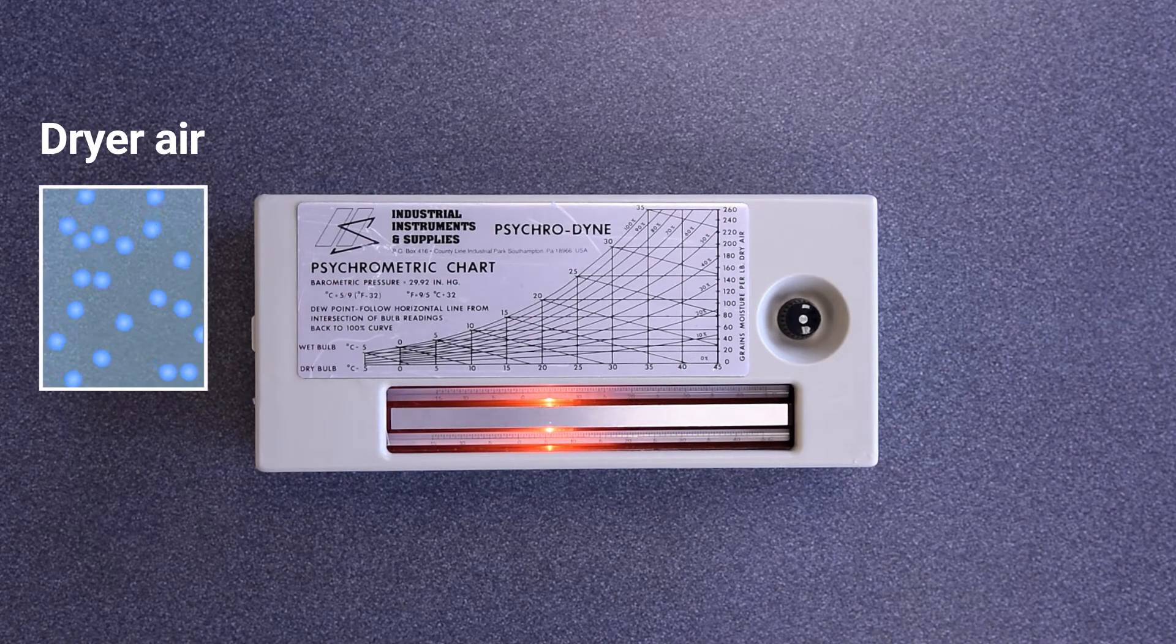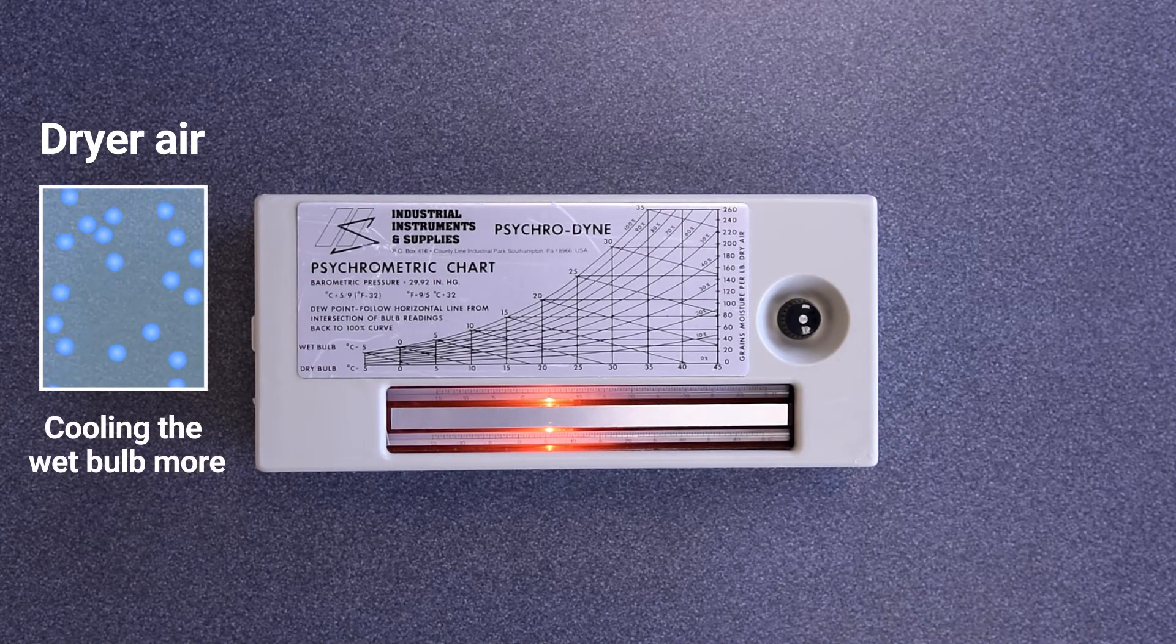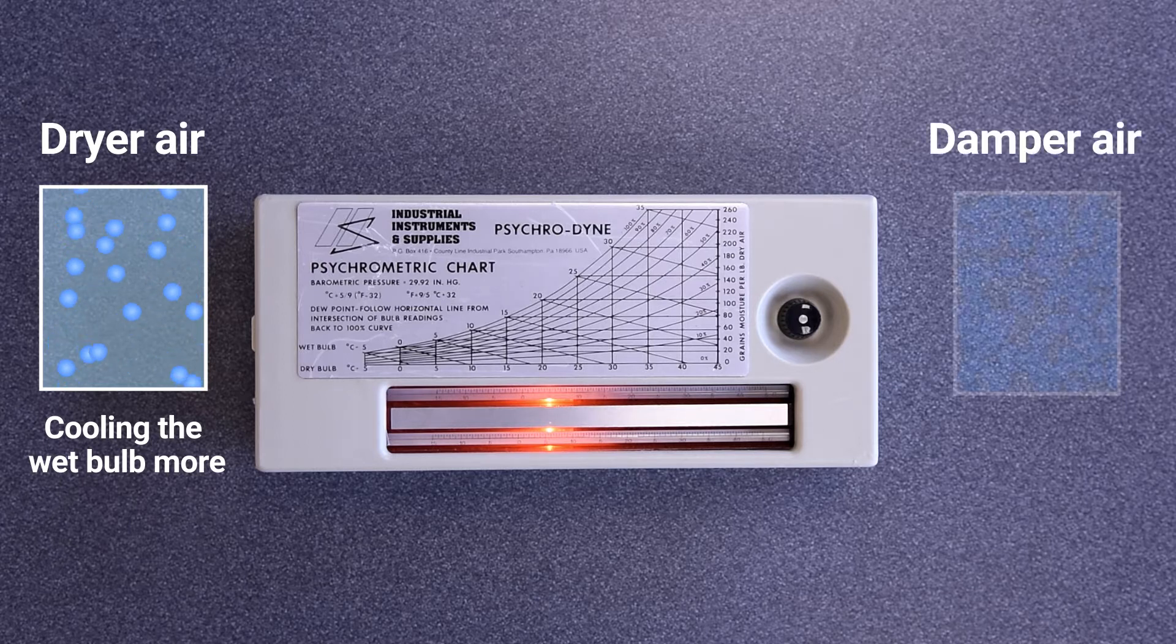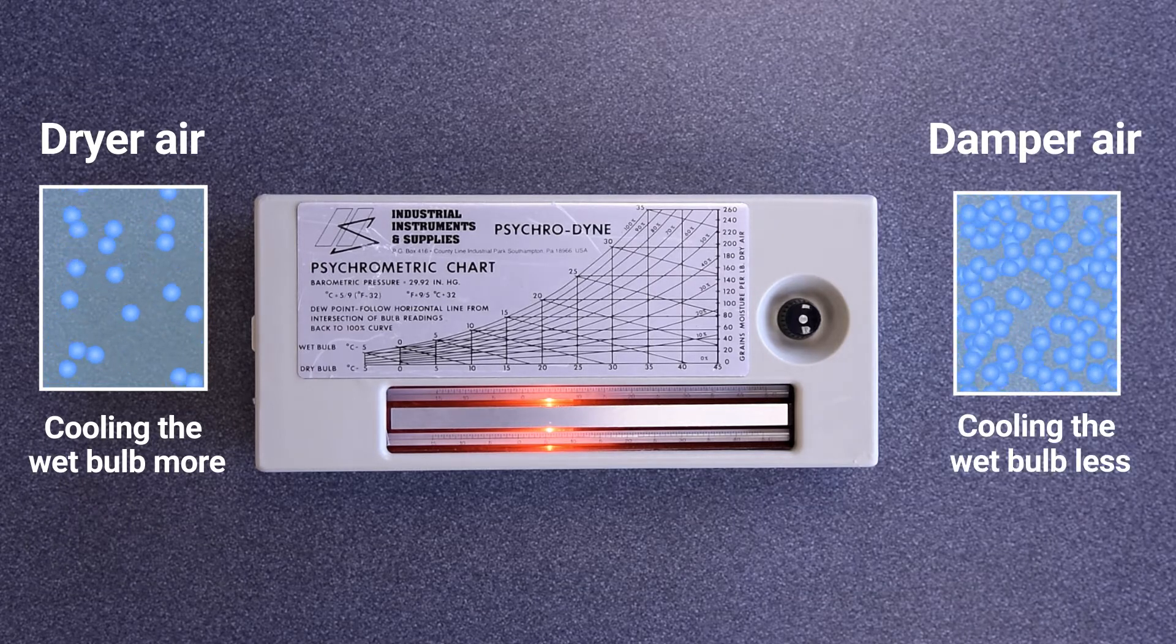Dryer air will absorb more water from the sock, cooling the wet bulb more. Damper air will absorb less water from the sock, cooling the wet bulb less.